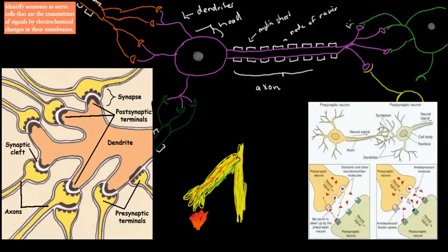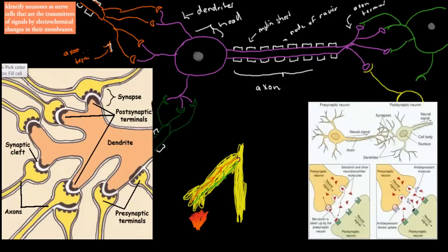On the end we've got the axon terminals — those are the bits that come off at the bottom, like our feet. So if the dendrites are at the head, the axon terminal will be our feet, and the axon will be our body. What's important is that they connect together: the axon terminals of one neuron connect to the dendrites of a different neuron.